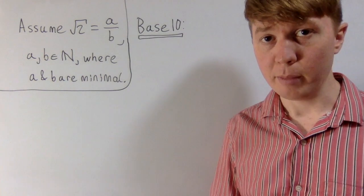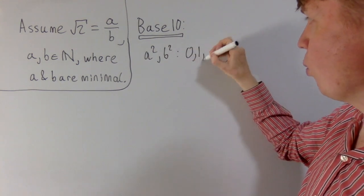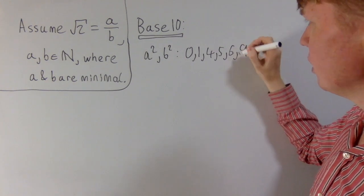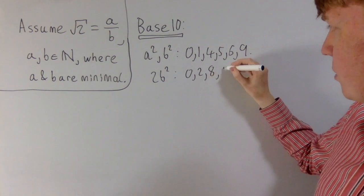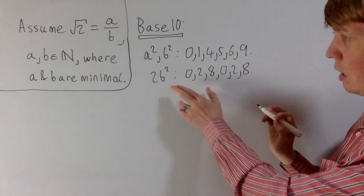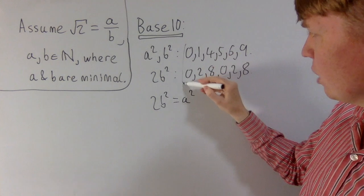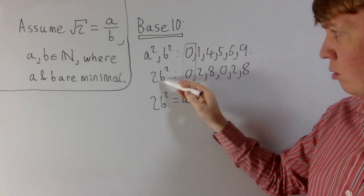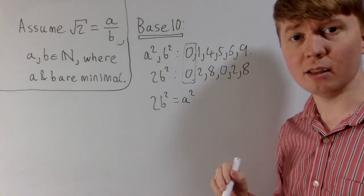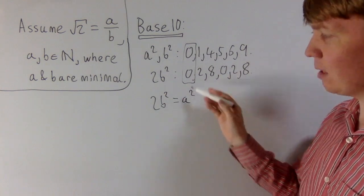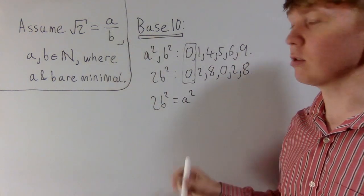We can try this sort of argument in base 10 as well. A square number in base 10 can have final digit 0, 1, 4, 5, 6, or 9. The last digit of 2b² can be: 2×0=0, 2×1=2, 2×4=8, 2×5=0, 2×6=2, 2×9=8 — so possibilities are 0, 2, or 8. The only overlap with the square digit set is 0, so a² and 2b² both have to end in 0. This means both are multiples of 10, so a and b are at least multiples of 5 — contradicting minimality, and showing root 2 is irrational.